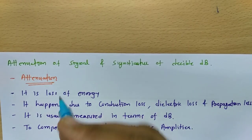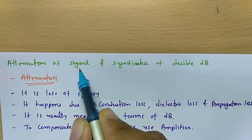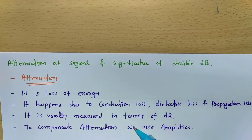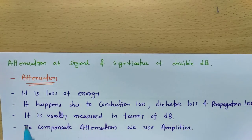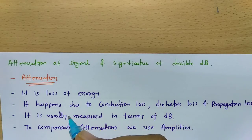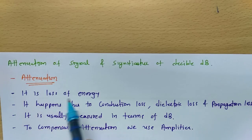Welcome to the digital communication playlist. In this session, I'll be explaining attenuation of signal and the significance of decibel, with examples. Attenuation of signal is a loss of energy that happens when a signal propagates along a transmission line or transmission medium — from one end to the other, a certain amount of energy is lost.